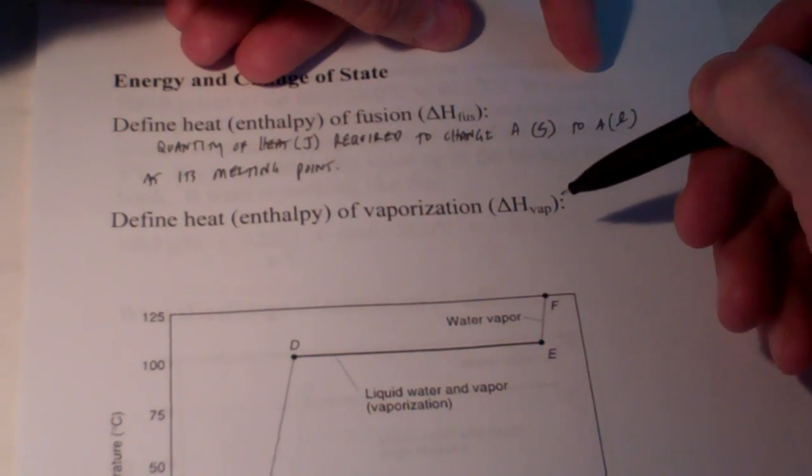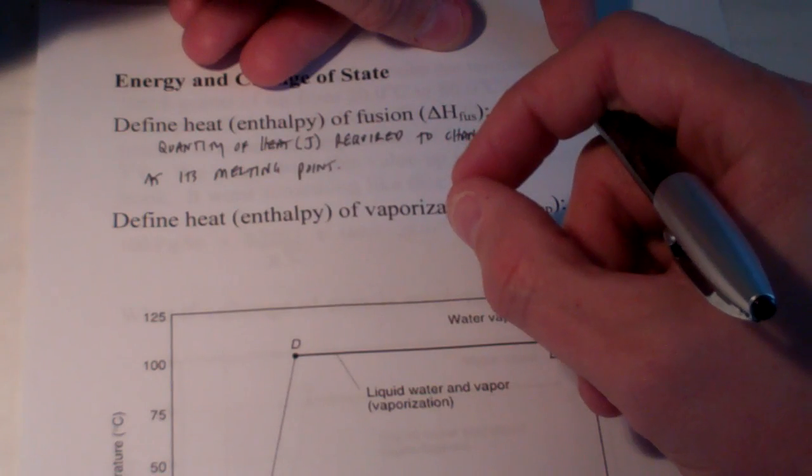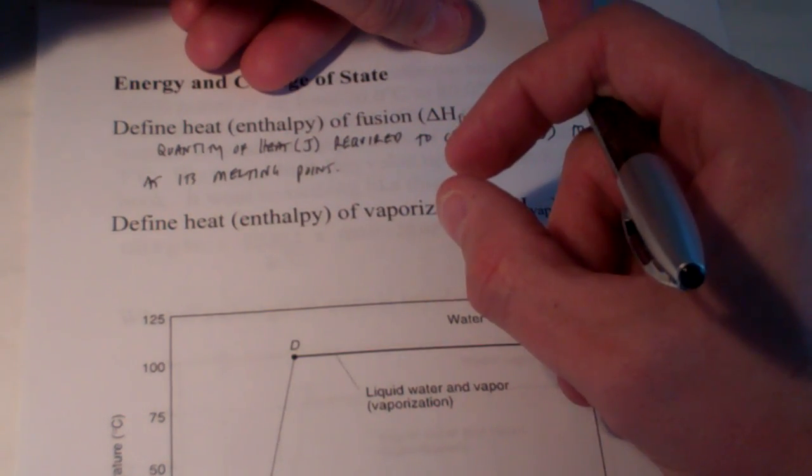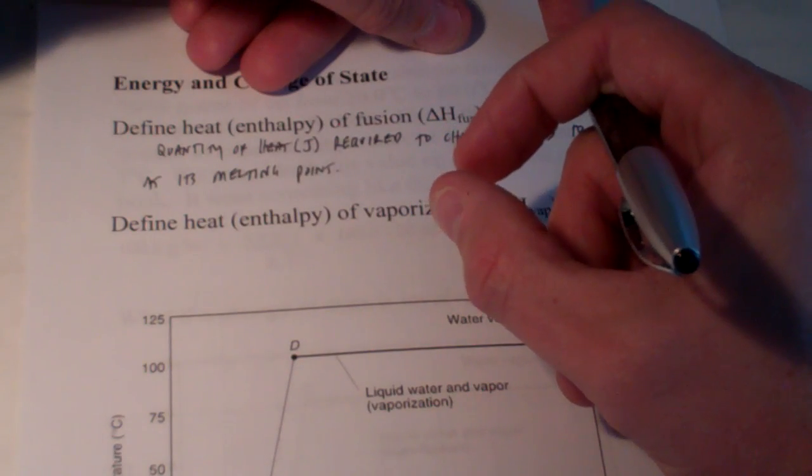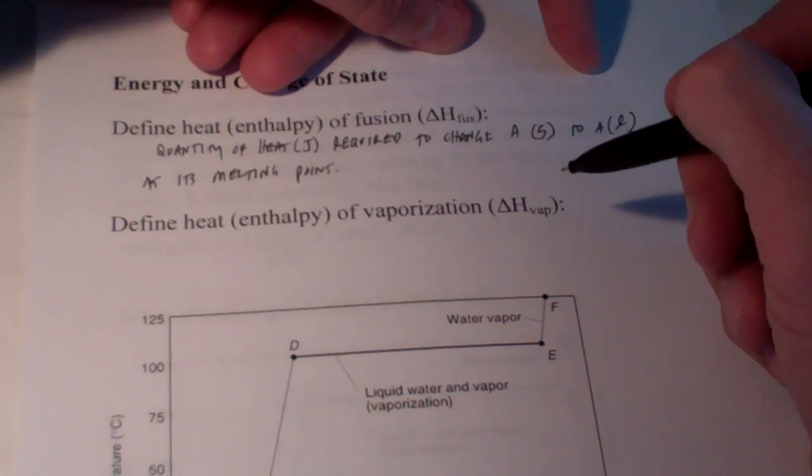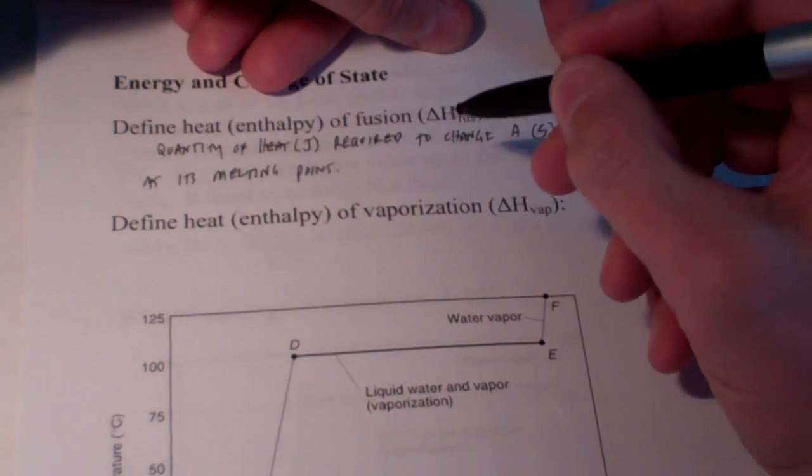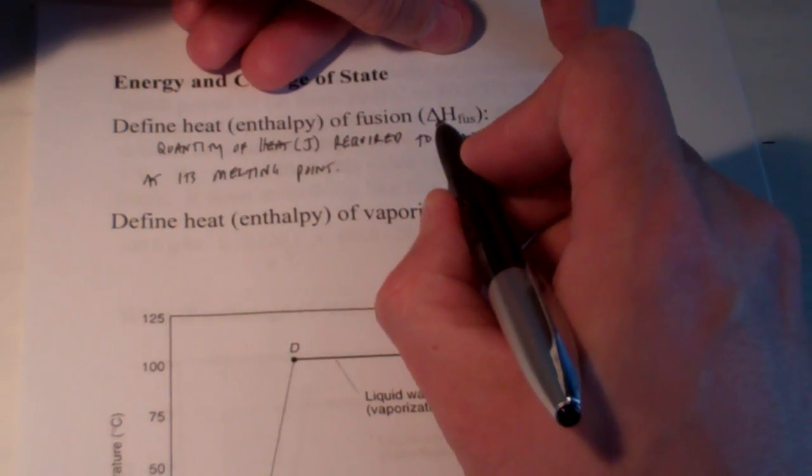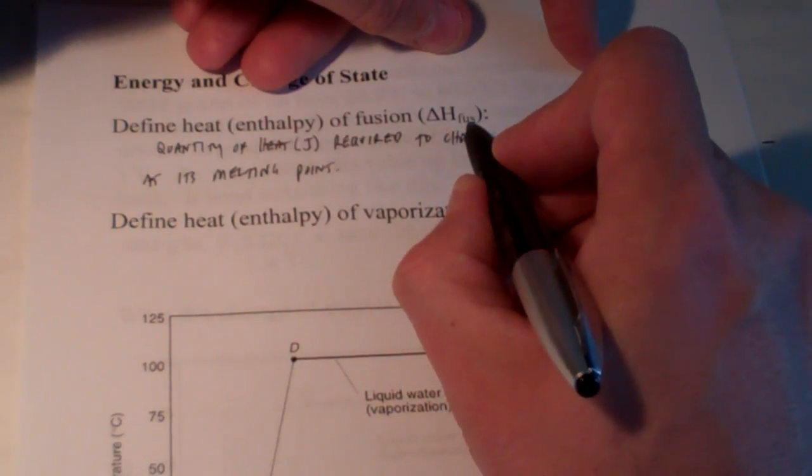to change a solid to a liquid at its melting point. So once we reach the melting point, those solid particles need to gain energy to be pulled away from each other so they can slide past each other and become a liquid. Now the quantity of energy required to do that at the melting point is known as the enthalpy of fusion, abbreviated delta H sub FUS.